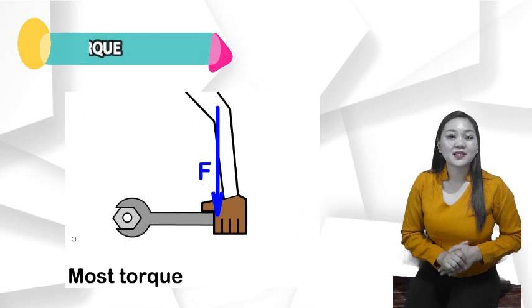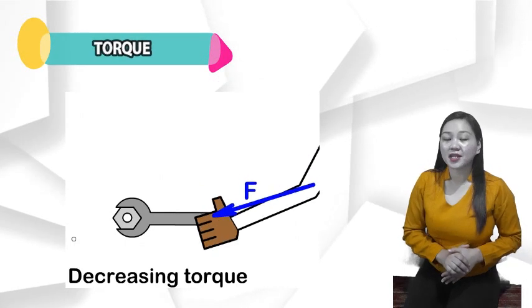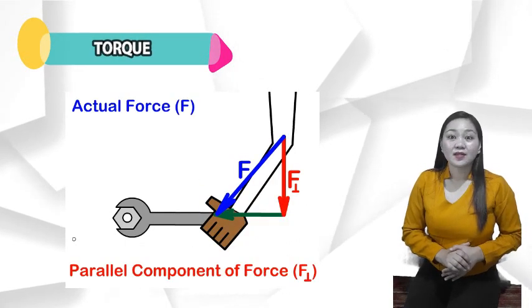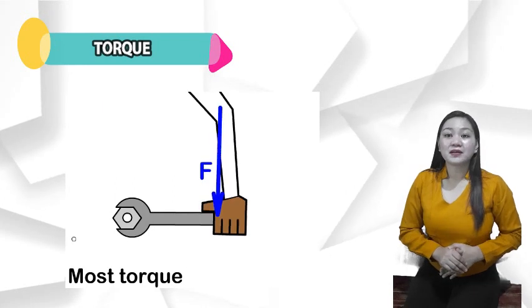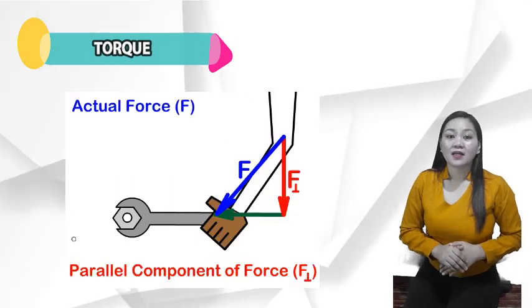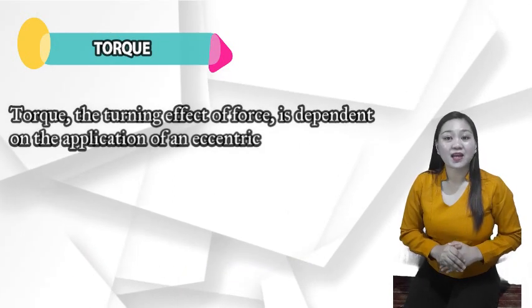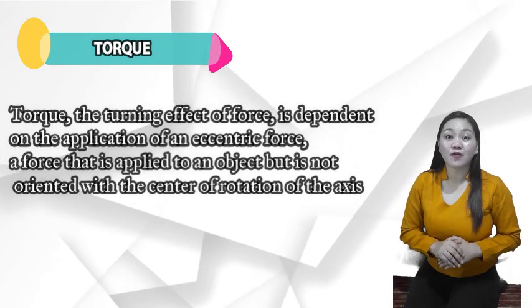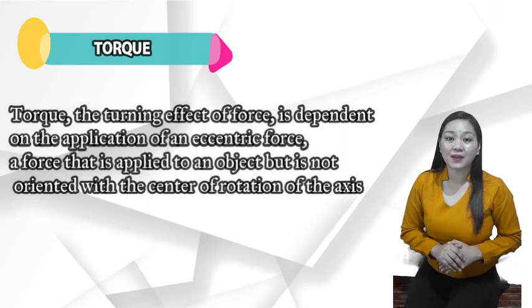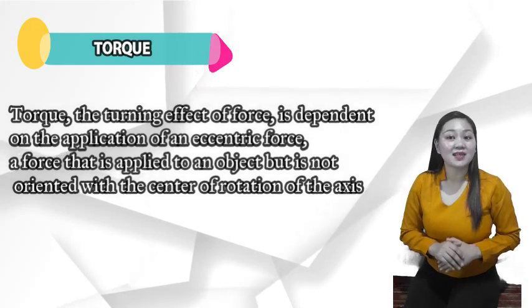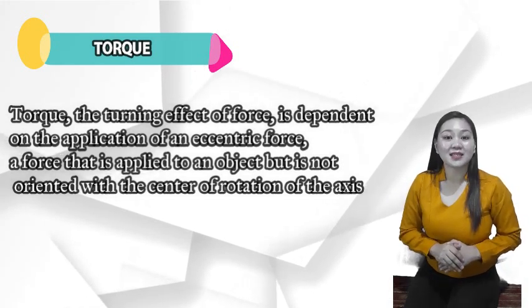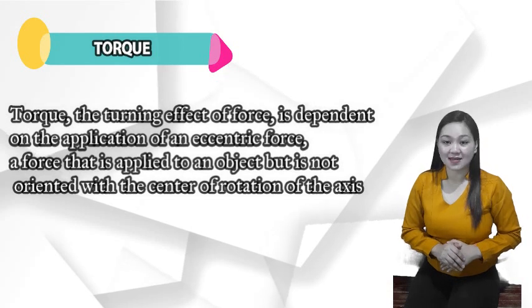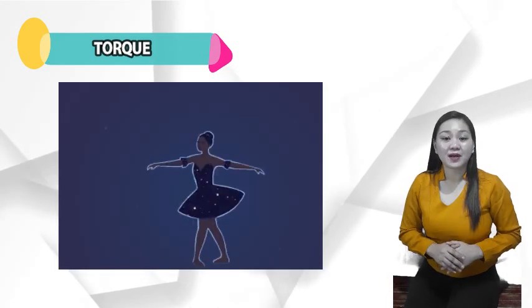Torque. Levers are rigid systems that turn about an axis. To turn, levers rely on torque. Torque, the turning effect of force, is dependent on the application of an eccentric force—a force that is applied to an object but is not oriented with the center of rotation of the axis. The more torque applied to the axis of rotation, the greater the turning effect of the force.